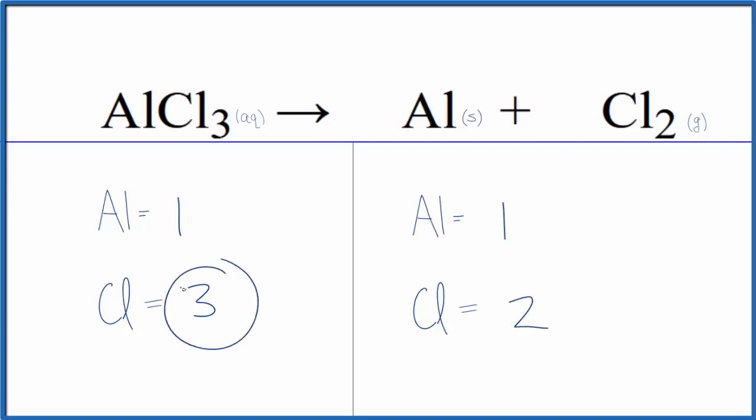Usually when we have an odd number like this, if we can get it to an even number, it makes the balancing a lot easier. So we could put a coefficient of two in front of the aluminum chloride here.